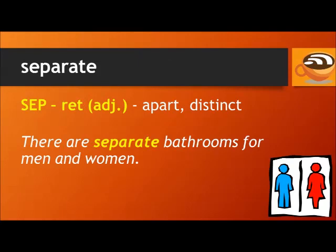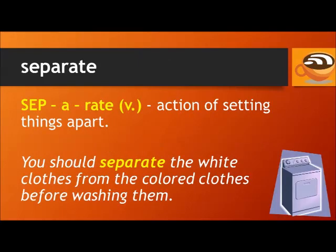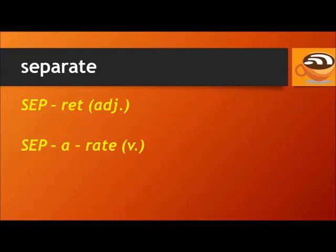Our next heteronym is 'separate' and 'separate.' 'Separate' is an adjective, meaning apart or distinct. For example: there are separate bathrooms for men and women. 'Separate' with three syllables is a verb, referring to the action of setting things apart. For example: you should separate the white clothes from the colored clothes before washing them. Separate. Separate.